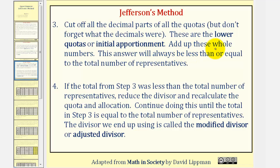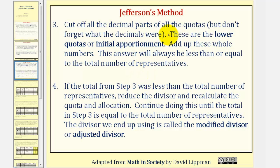We add these whole numbers. This answer will always be less than or equal to the total number of representatives. If it equals the total number of representatives, we're done. But if it's not, we go to step four.